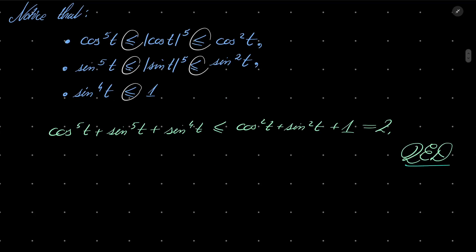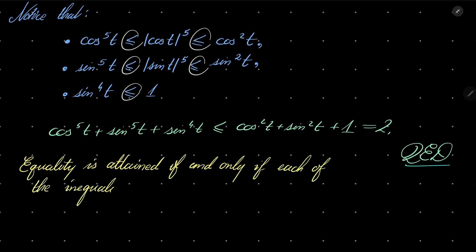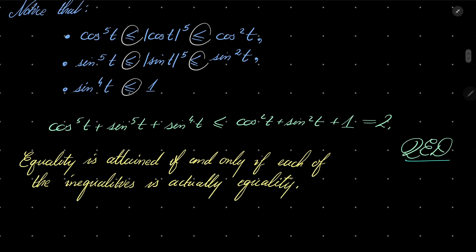So, equality is attained if and only if each of the marked inequalities is actually equality. And now let's take a look.